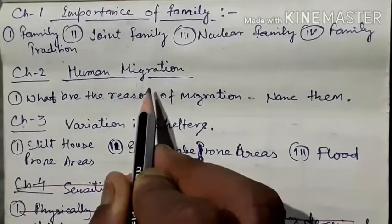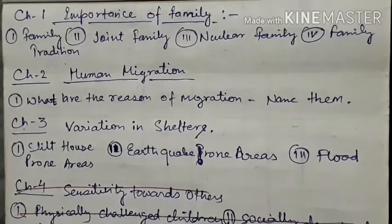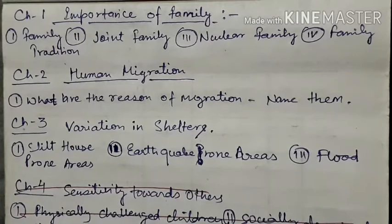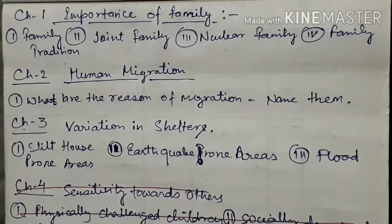Chapter number two is human migration, and from this chapter some important questions are: what are the reasons of migration? We already know about the two forms of migration. One reason is forced migration, and the second one is on the people's own choice — it is called voluntary migration. Voluntary migration is when people move from one place to another on their own wish. Forced migration is when people move due to disasters such as earthquake, volcano, flood, drought, famine, etc.